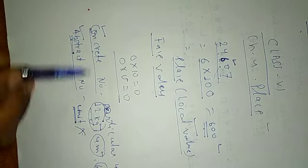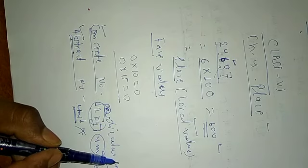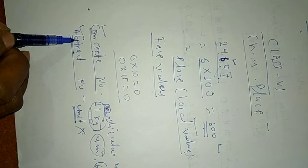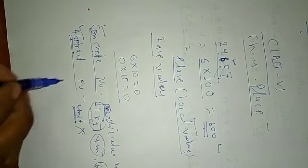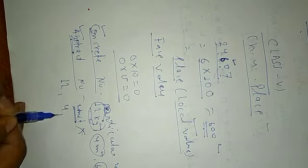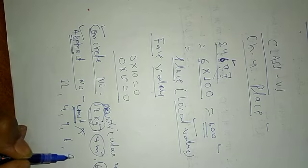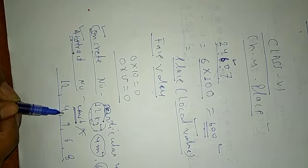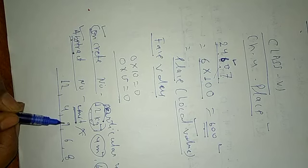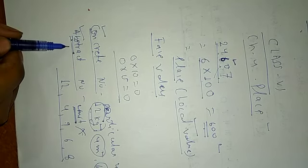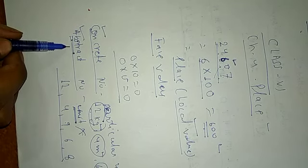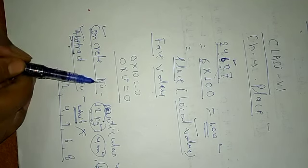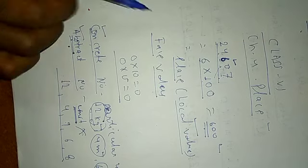A concrete number is one which refers to a particular unit and is meaningful. An abstract number does not refer to any particular unit — for example, just 12, 4, 9, 6, 8. These numbers do not refer to any type of unit, so they are called abstract numbers. I hope that is clear.